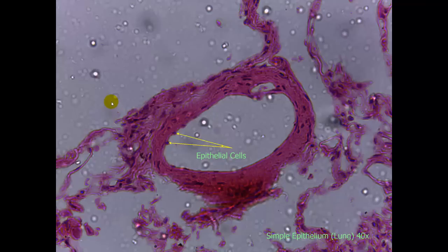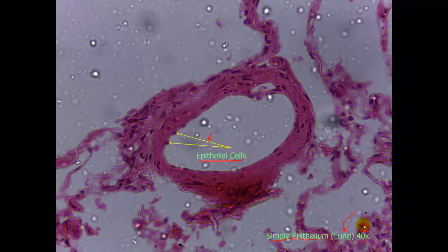A couple of things to note before we get started: there are often labels within the slides themselves pointing out what you are trying to look at, indicated by yellow arrows. At the bottom, we have the description of what you are looking at, where it is found, and at what objective magnification. Note that this is just the objective, not the total magnification. To find total magnification, multiply that value by 10x.